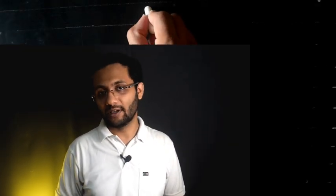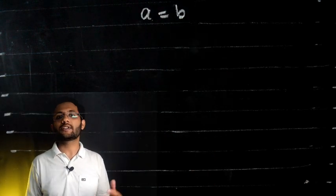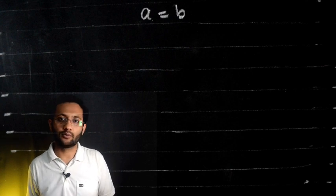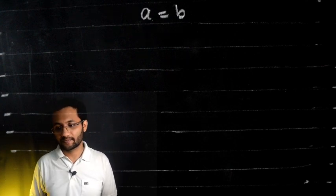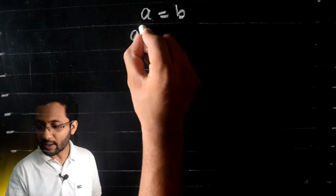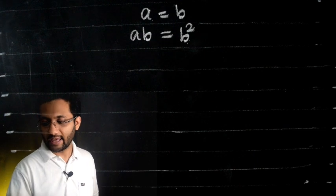Let's start with a simple, very simple equation: a = b. If a equals 2, b also equals 2, or a equals 4, b is also 4, and so on. Let's multiply both sides with b, so we have a × b = b².